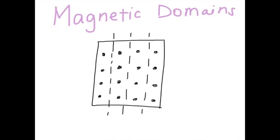However, in substances that are said to be ferromagnetic, the atoms align to form magnetic domains, which are regions composed of atoms whose magnetic fields are aligned in the same direction.